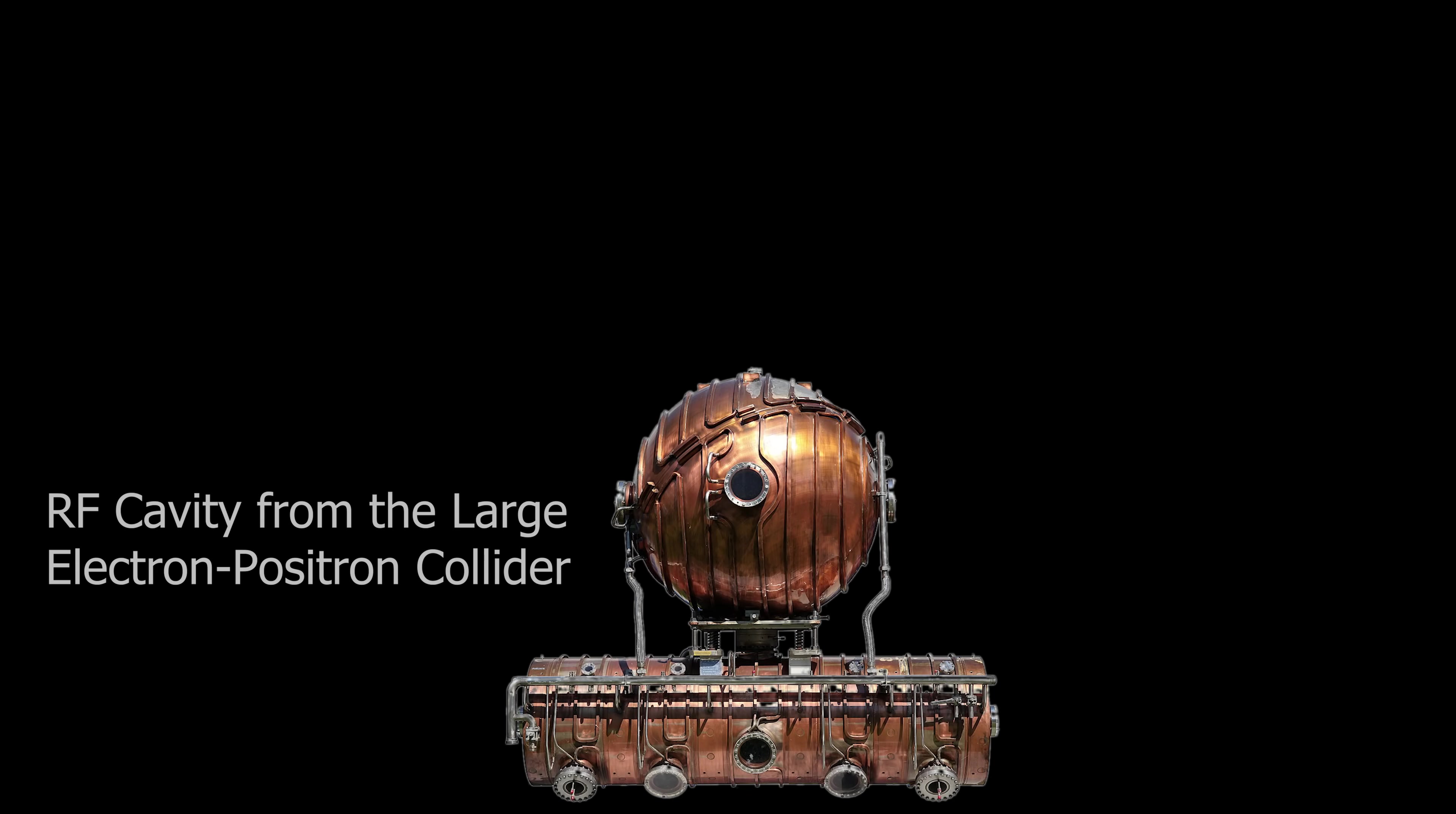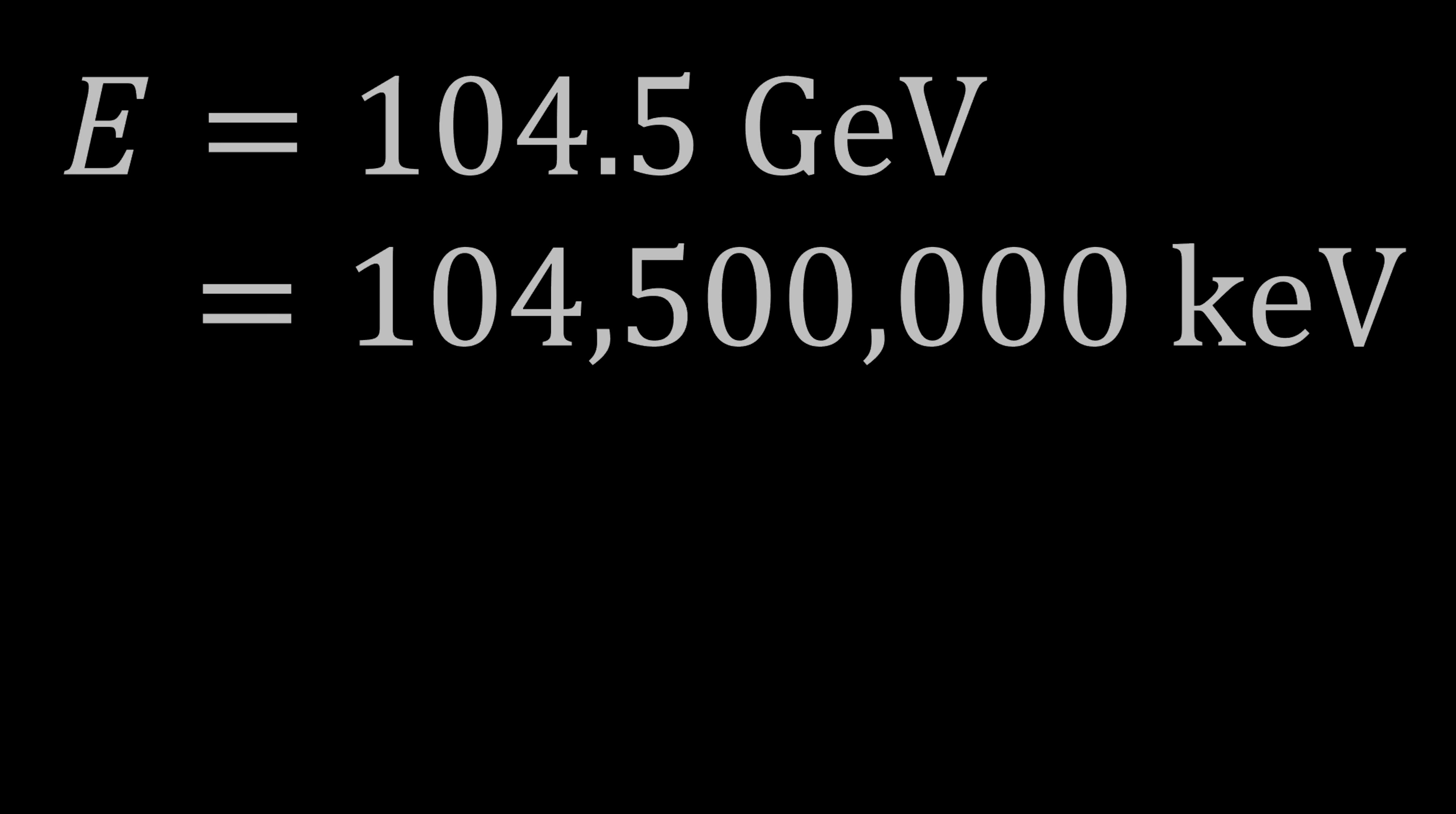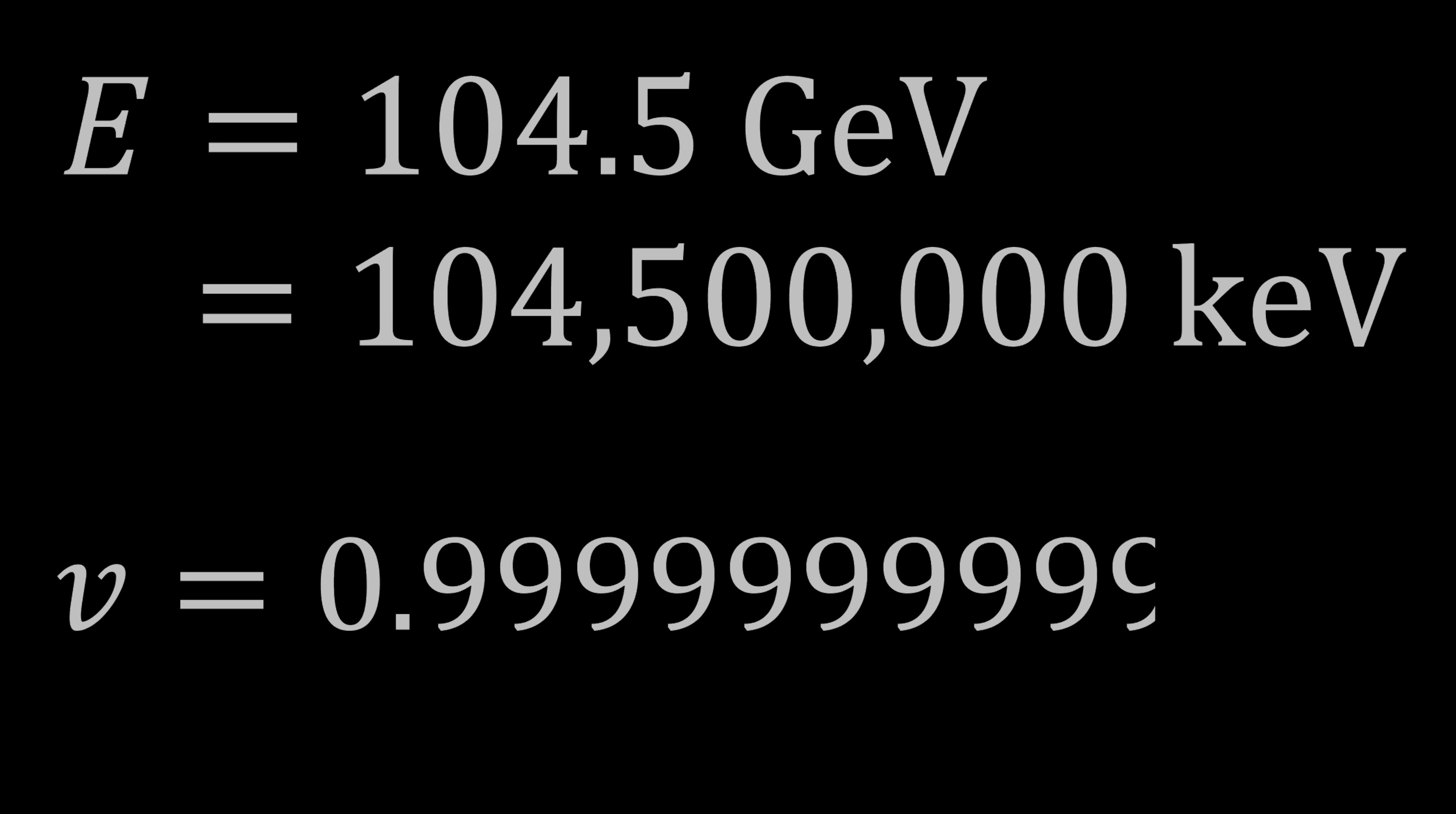Just for a sense of perspective, the fastest electron ever accelerated by CERN's Large Electron-Positron Collider was over a hundred GeVs—that's giga electron volts, over a hundred million keVs. So what is this particle traveling? Like half a million times faster than the speed of light? No. Actually its speed was 0.9999999988 times the speed of light.